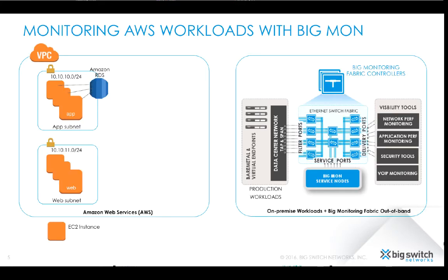We will now explore some of the details of our solution. On the right hand side we are showing a typical on-prem deployment of Big Monitoring Fabric. Tap and span ports in the production network feed the fabric, and through the Big Monitoring Fabric controller we create policies to filter and deliver traffic to the tool farm.